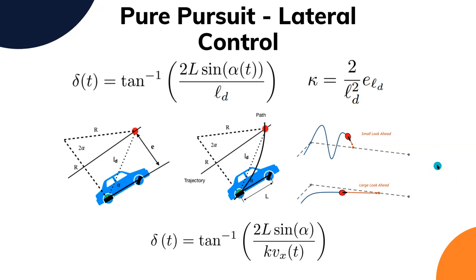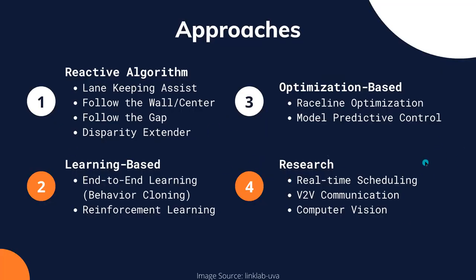Other approaches to solve F1/10 navigation include: reactive algorithms — the most popular being Follow the Gap; optimization-based algorithms, which we have implemented; race line optimization, where they create an optimal trajectory offline and use control algorithms to follow it, turning reactive when there's an obstacle in the path; and learning-based algorithms using reinforcement learning or deep learning.